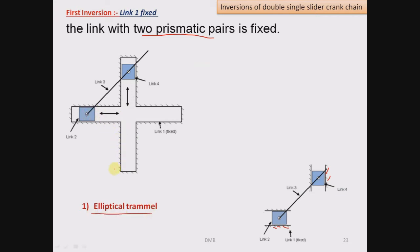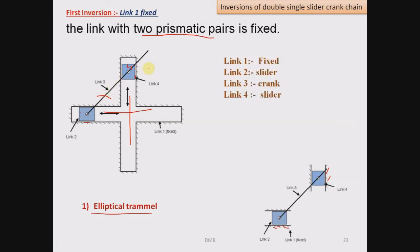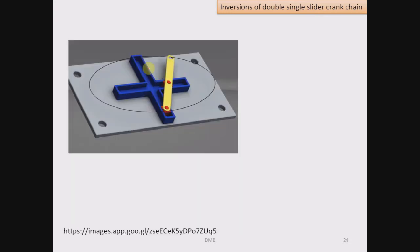Link number 1 has been converted in the form of a slotted link, which forms prismatic pair with link number 4 and link number 2. Inside this slotted link, link number 4 will slide in the vertical guide and link number 2 will slide in the horizontal guide. When these sliders slide inside these guides, link number 3 will act as crank and rotate. Any point on link number 3 except the midpoint will move along an elliptical path. So this is called as elliptical trammel.